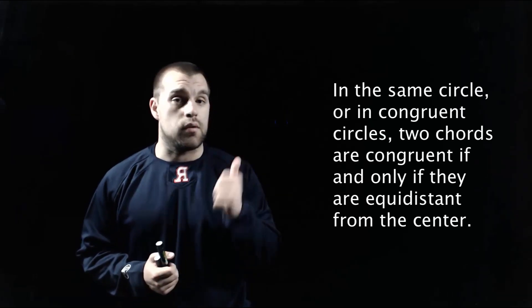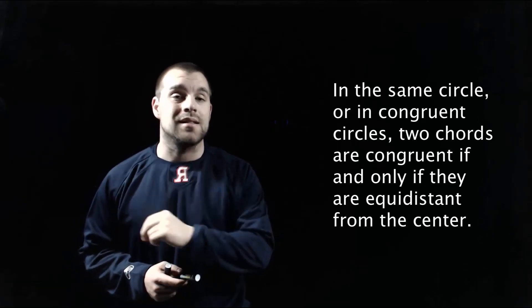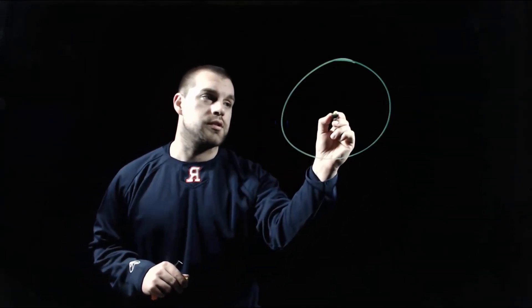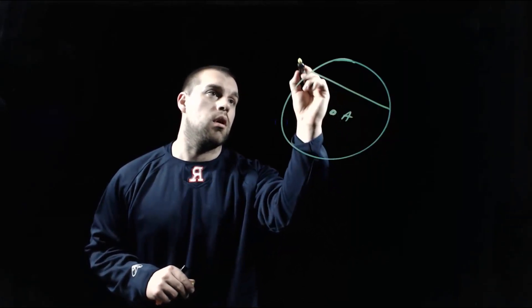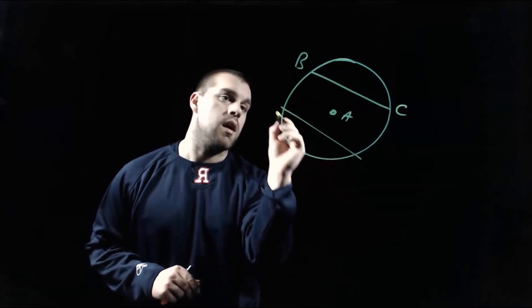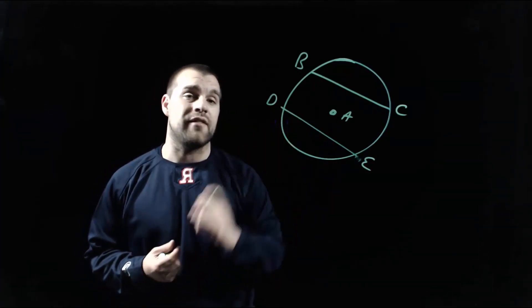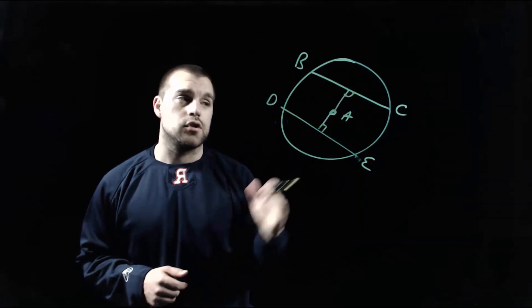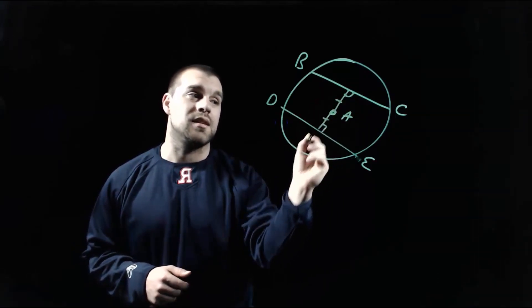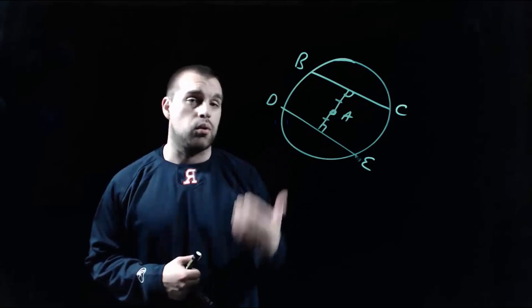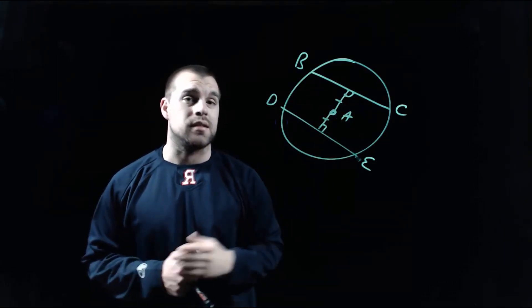We have one more property dealing with chords, and this works for chords in the same circle or in congruent circles: two chords are congruent if and only if they are the same exact distance away from the center point of the circle. So in a circle with center point A, chords BC and DE can only be congruent if the distance from A to each chord is equal. This also works in the other direction — if we know the two chords are congruent, then they must be the same distance from the center.